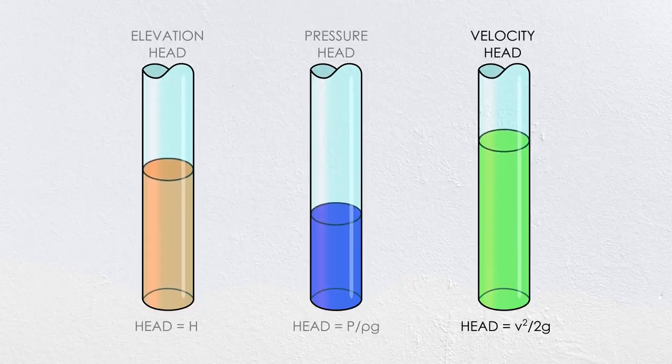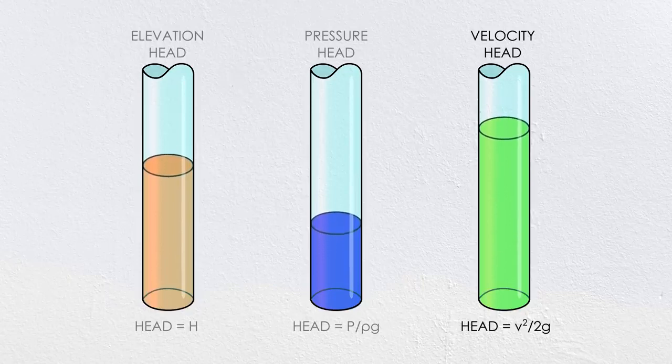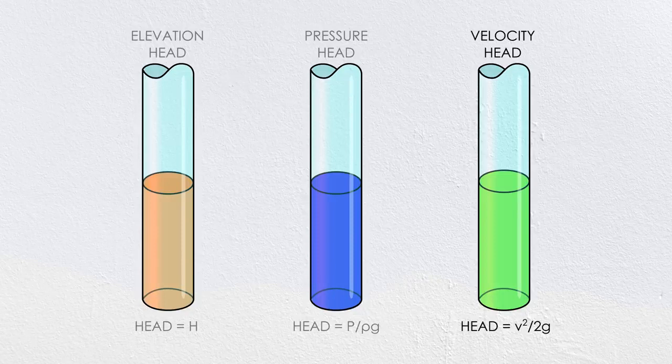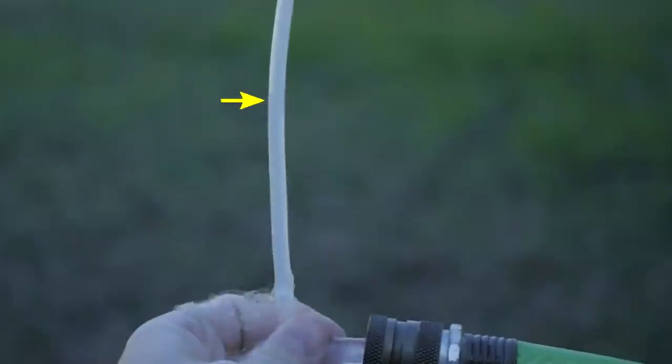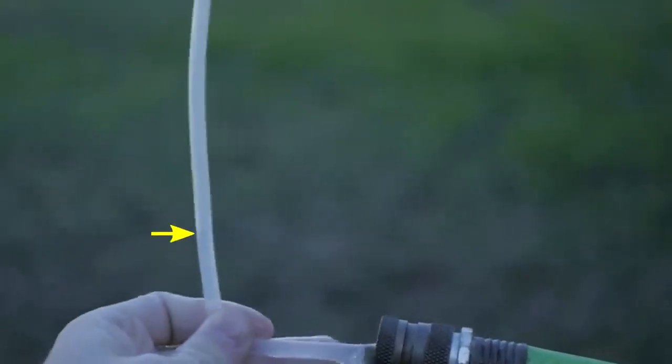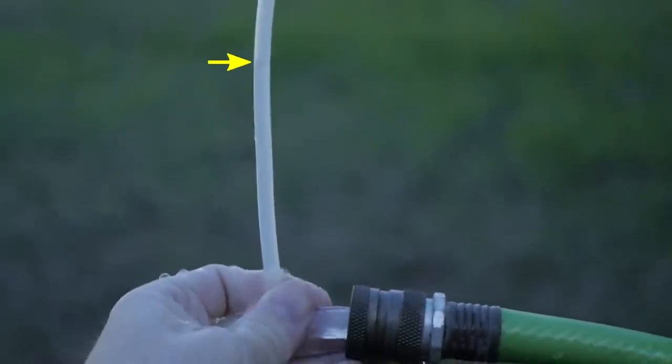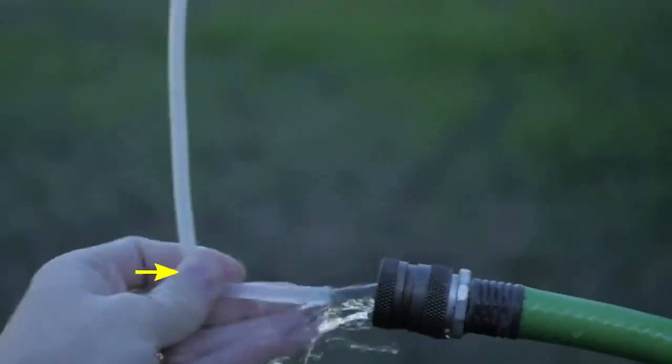The final type of energy is velocity head, which relates to a fluid's kinetic energy. The conversion for velocity head is velocity squared divided by 2 times the gravitational acceleration. I can demonstrate the equivalent column of water using a tool called a Pitot tube. That's a lot of background, but it's important in understanding the function of a ram pump.